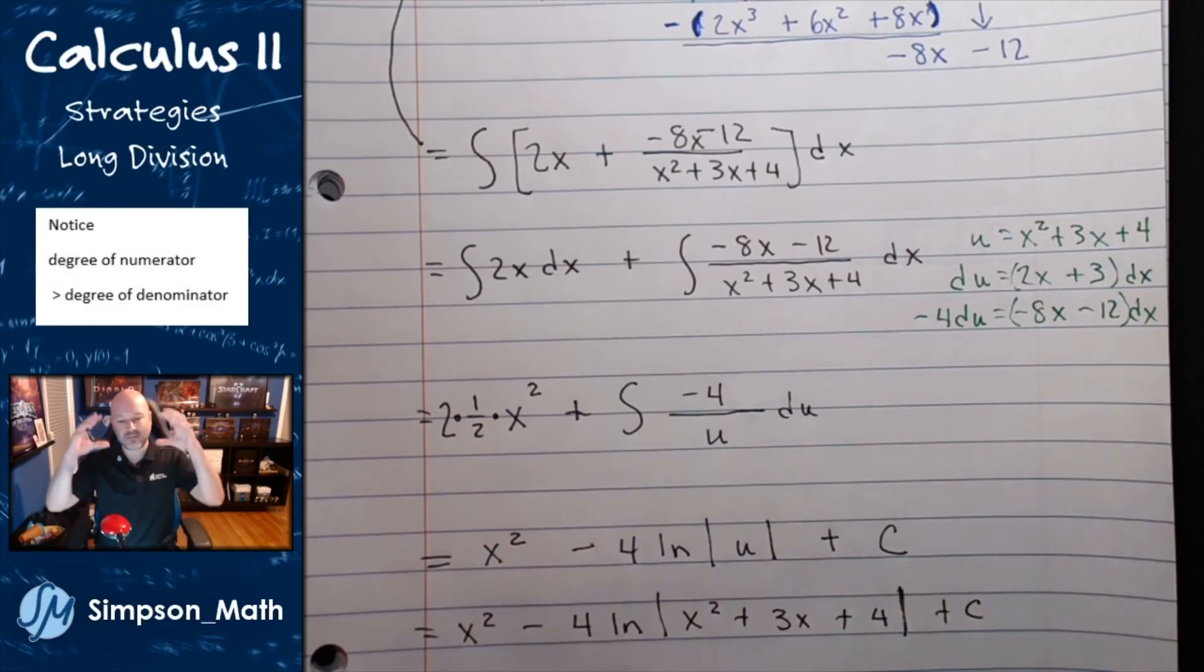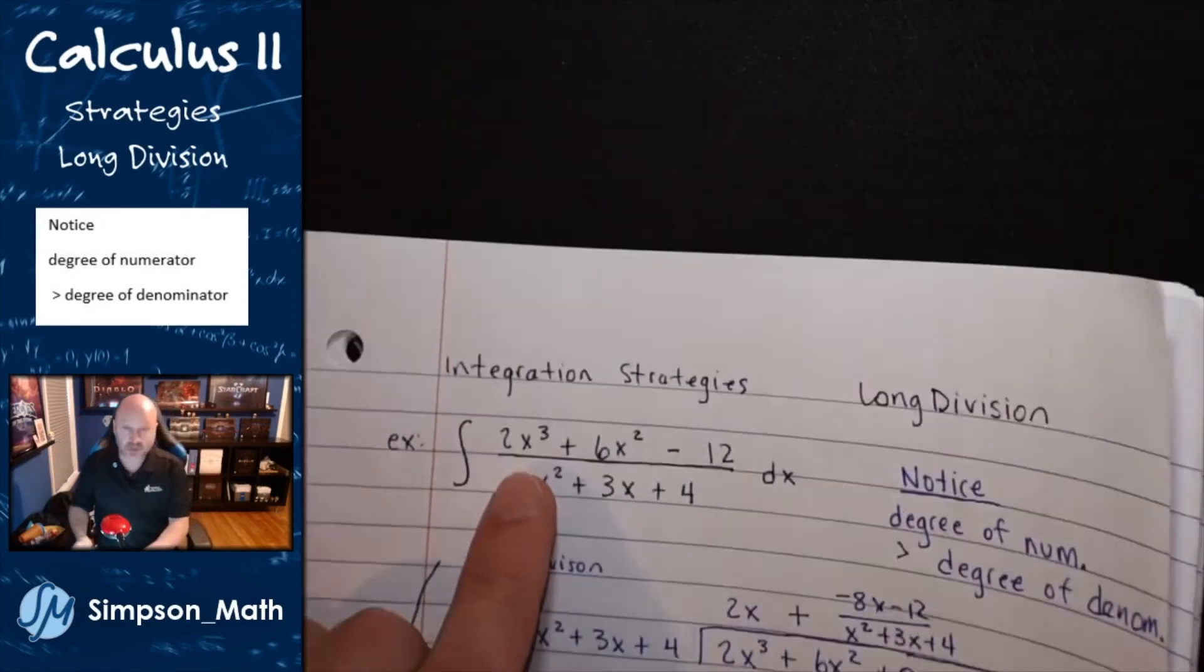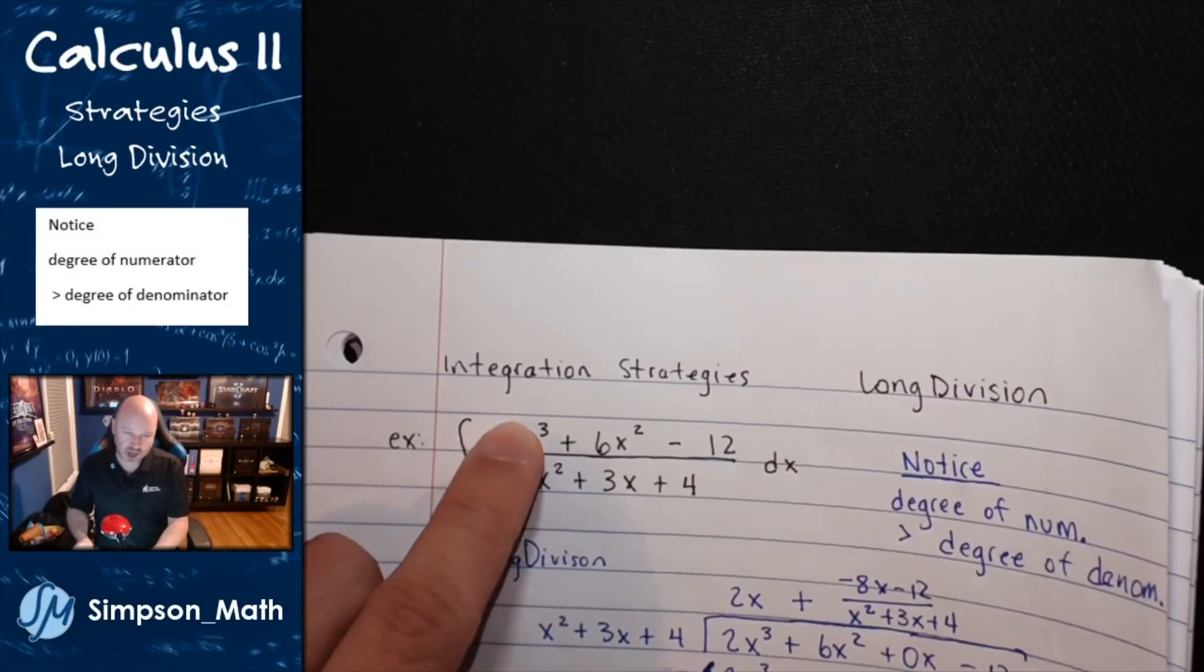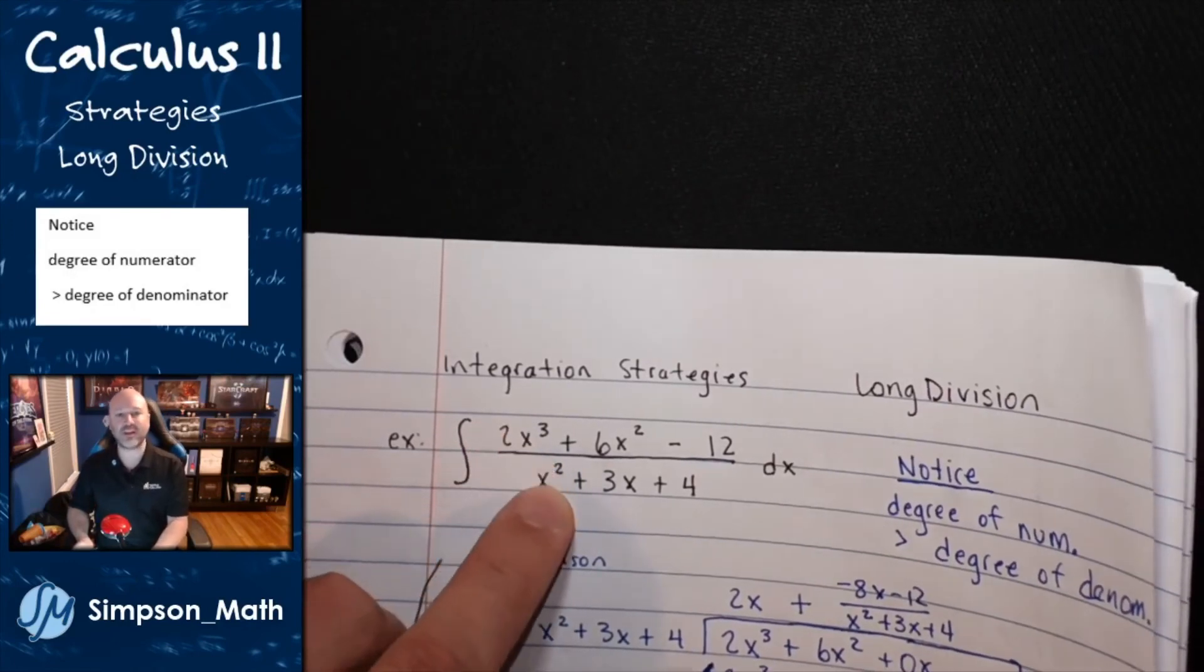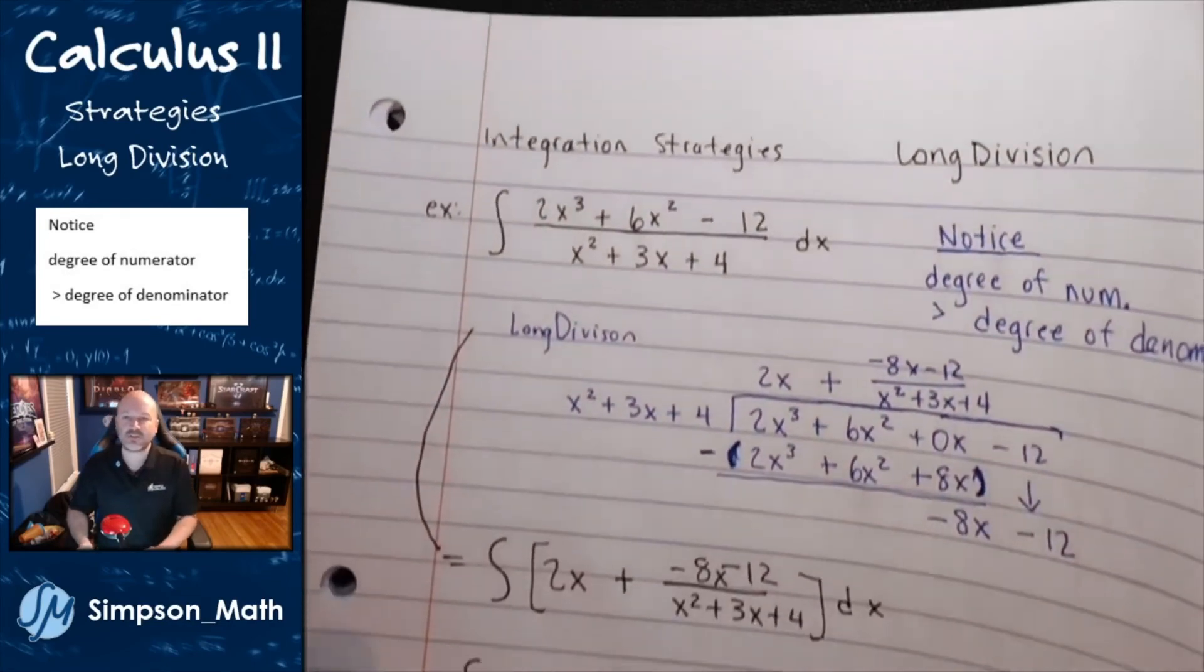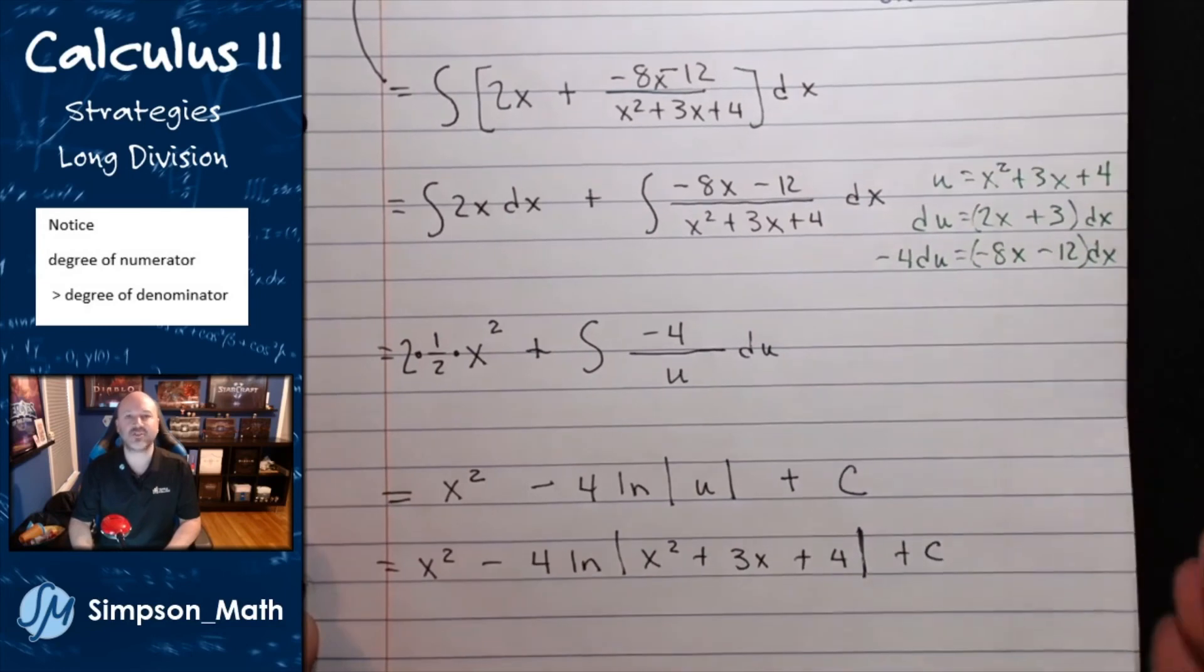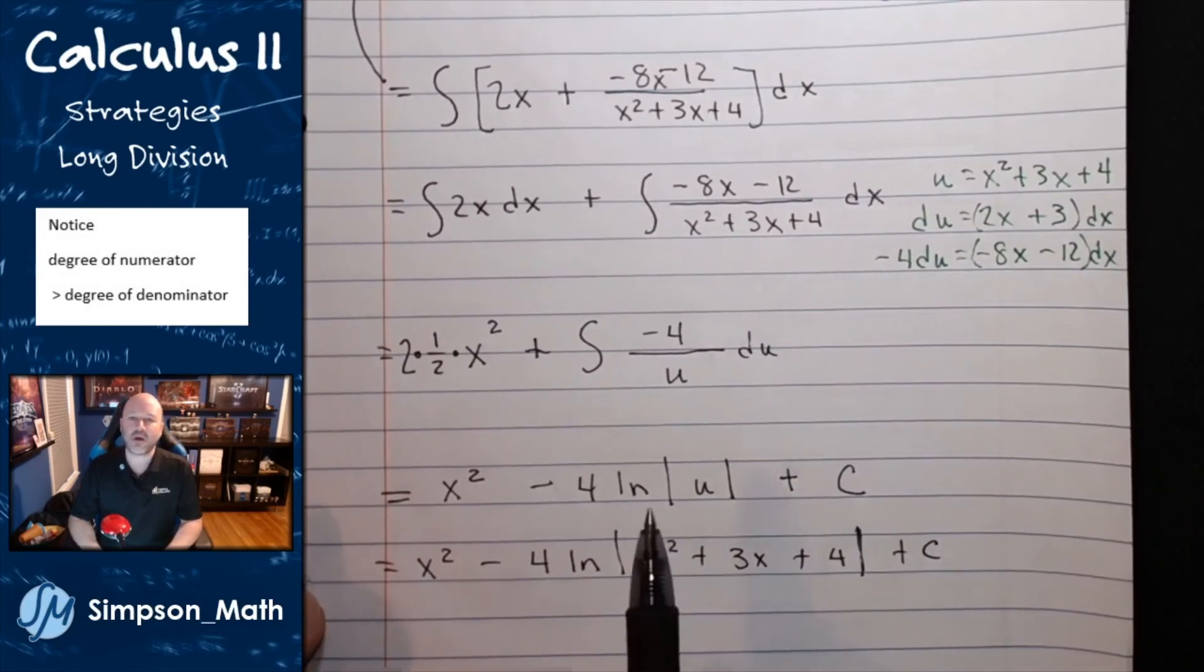When it's kind of that top-heavy, when there's more going on upstairs - I've got a cubic to begin with over a quadratic. There's a higher degree in the numerator than in the denominator. That's a good clue that maybe long division would work out.